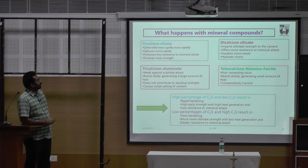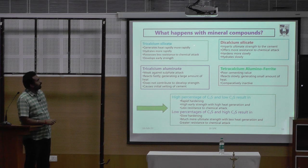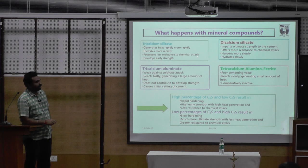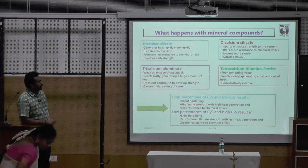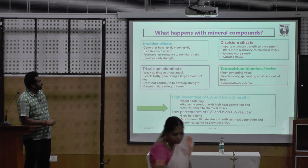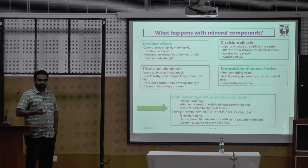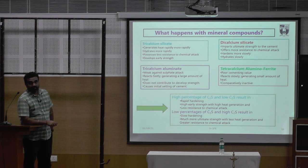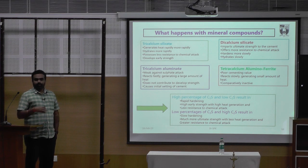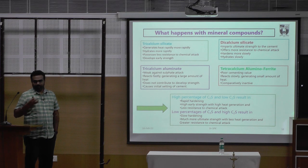After understanding the basics of how composites and components form when you mix cement with water, you get a clear picture of how there is a possibility of having enhancement in the ettringite formation and monosilicate formation. What happens with mineral components: when you take tricalcium silicate, it generates heat rapidly, the hydration process is more rapid, but it has less resistance to sulphate attack. Similarly, for tricalcium aluminate, it is weak against sulphate attack and reacts much faster. When we understand the oxide compositions, we can define the material very easily — how it is going to perform after 28 days or after 365 days.